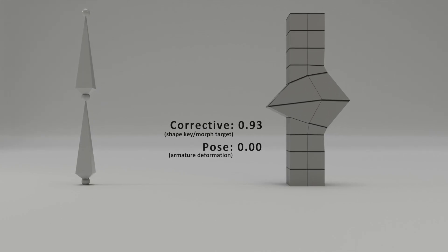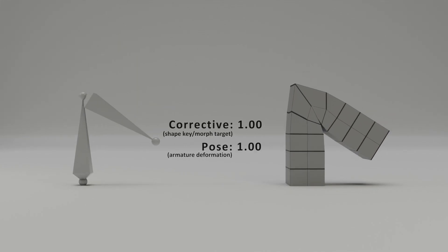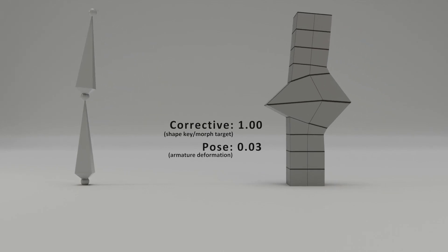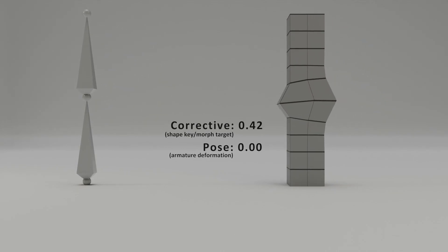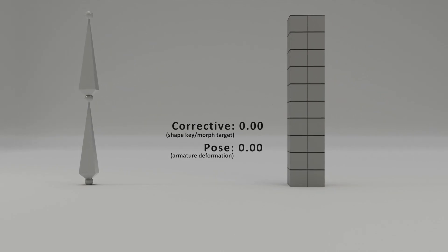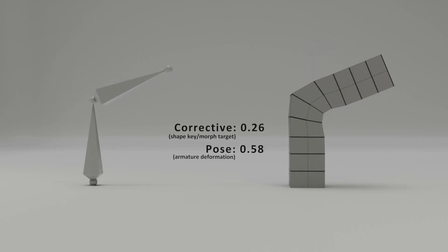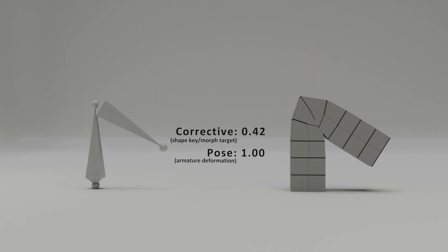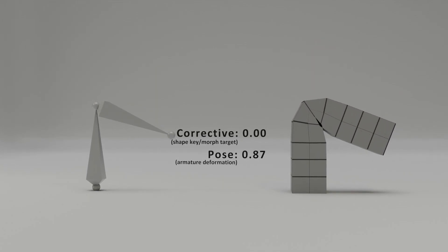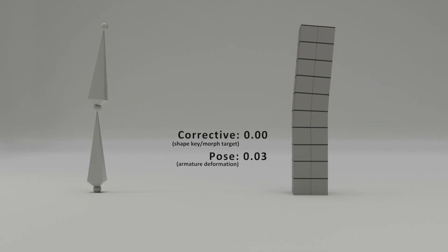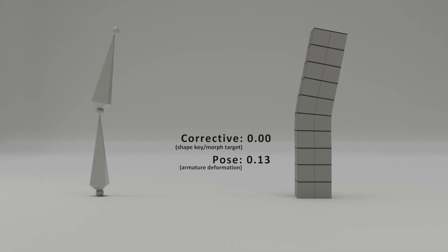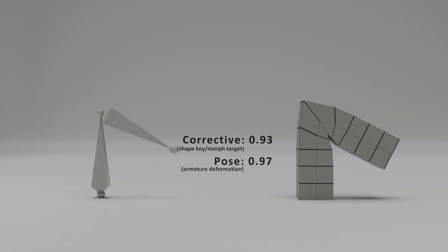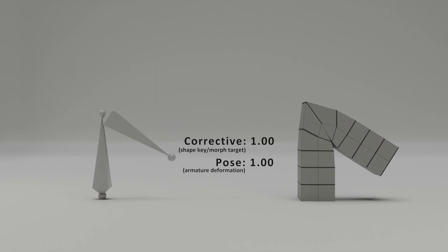Higher LOD and optimized MetaHumans typically rely only on skeletal animations without morph target correction. In a sense, skeletal animation does most of the heavy work in deforming the mesh, while morph targets smooth out imperfections for the best possible quality.